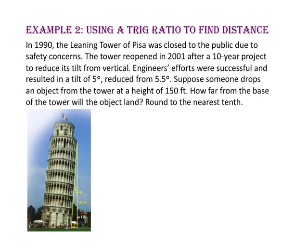In example 2, we will use a trig ratio to find distance. In 1990, the Leaning Tower of Pisa was closed to the public due to safety concerns. The tower reopened in 2001 after a 10-year project to reduce its tilt from vertical. Engineers' efforts were successful and resulted in a tilt of 5 degrees, reduced from 5.5 degrees. Suppose someone drops an object from the tower at a height of 150 feet. How far from the base of the tower will the object land?